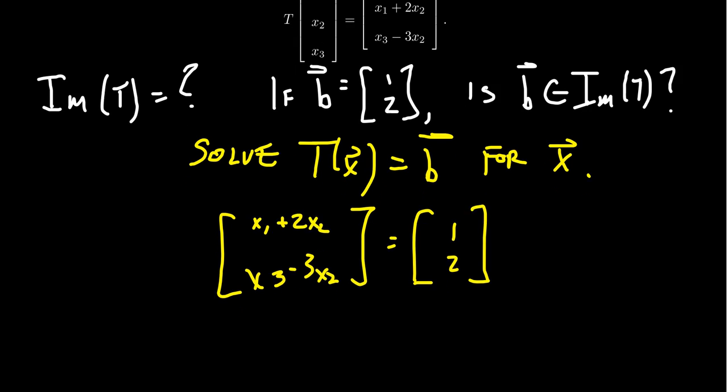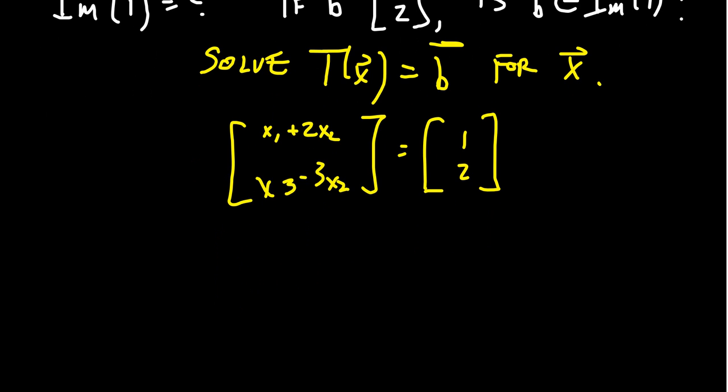Now, we considered a similar type problem here when we were considering the kernel of the map. The only way that two vectors could equal is that component by component, they're the same entry. So the first components have to equal: x₁ + 2x₂ has to equal 1, and the second component has to also equal each other on the left and the right. So x₃ - 3x₂ has to equal 2.